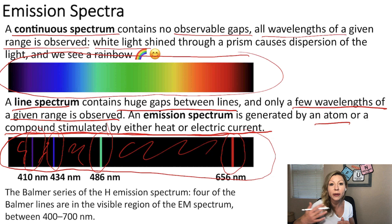we can see the emission lines of hydrogen of the so-called Balmer series. Four of the Balmer series are in the visible region of the electromagnetic spectrum between 400 and 700 nanometers.